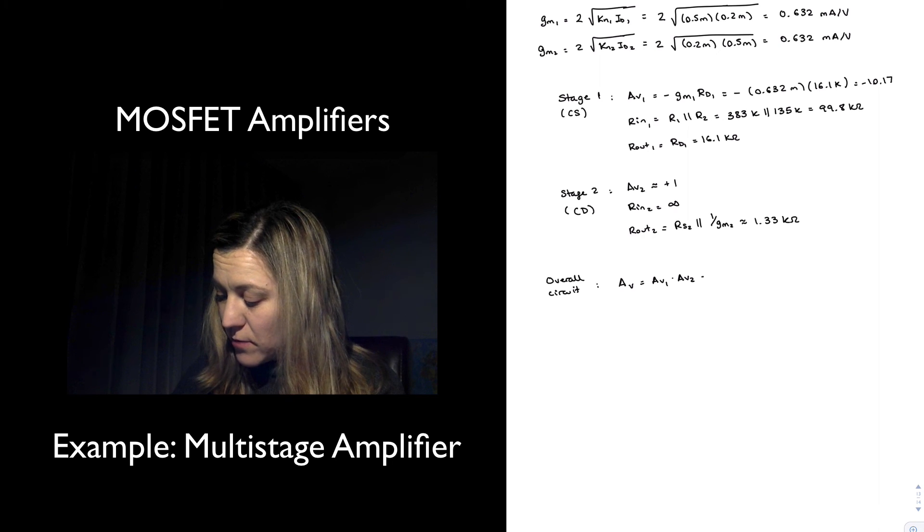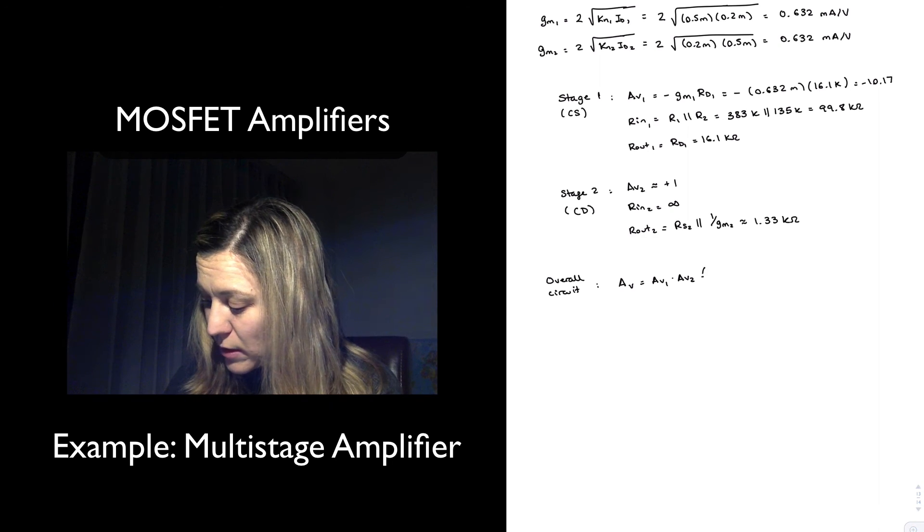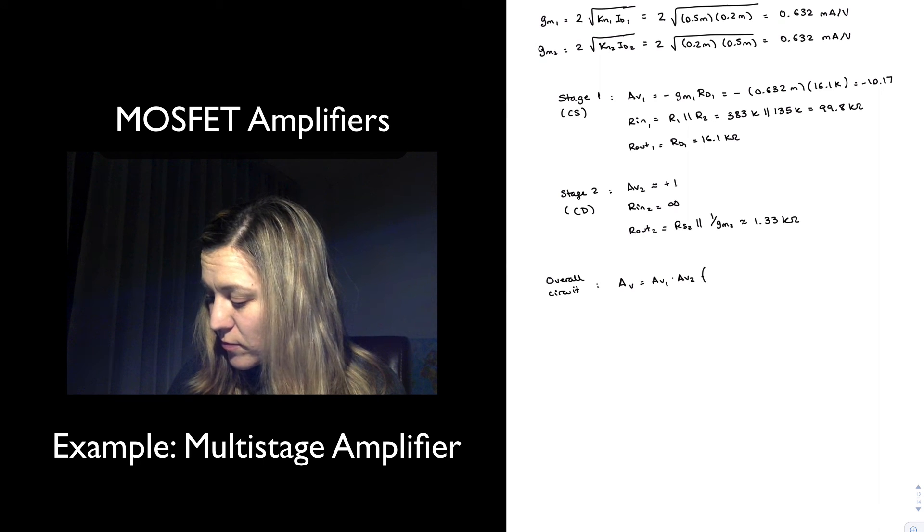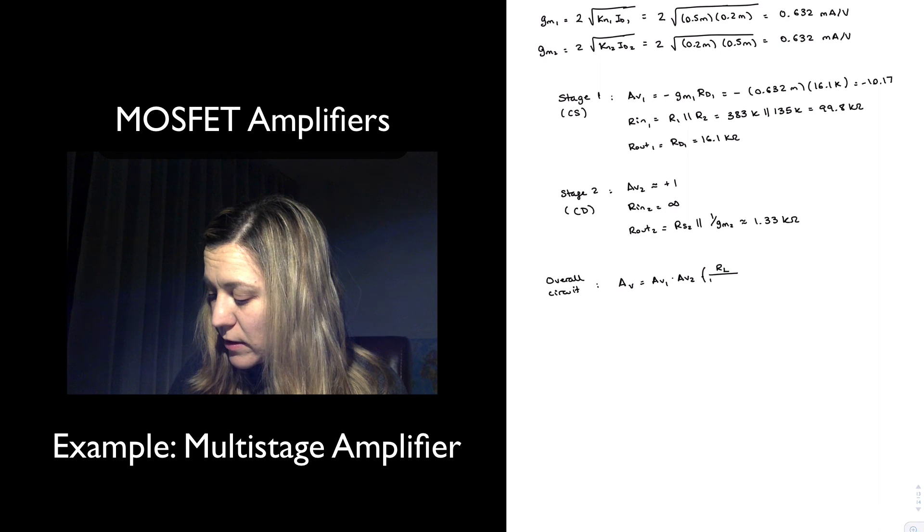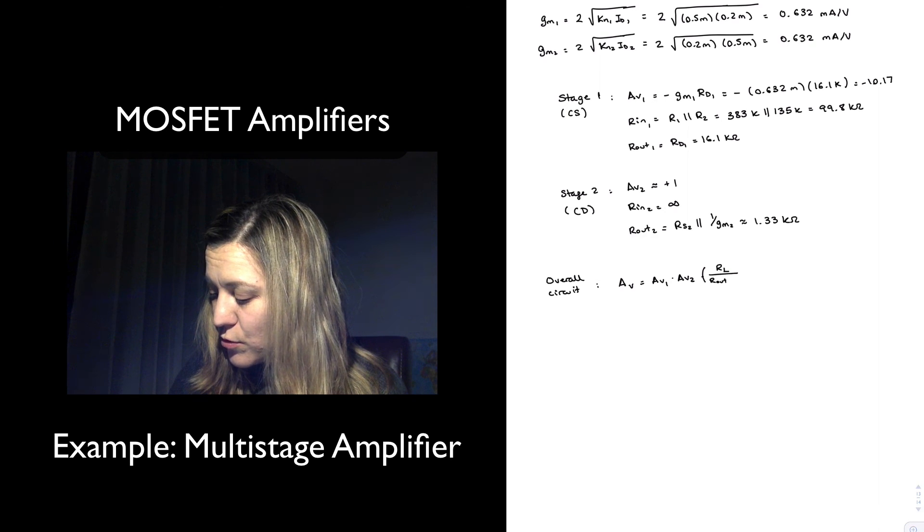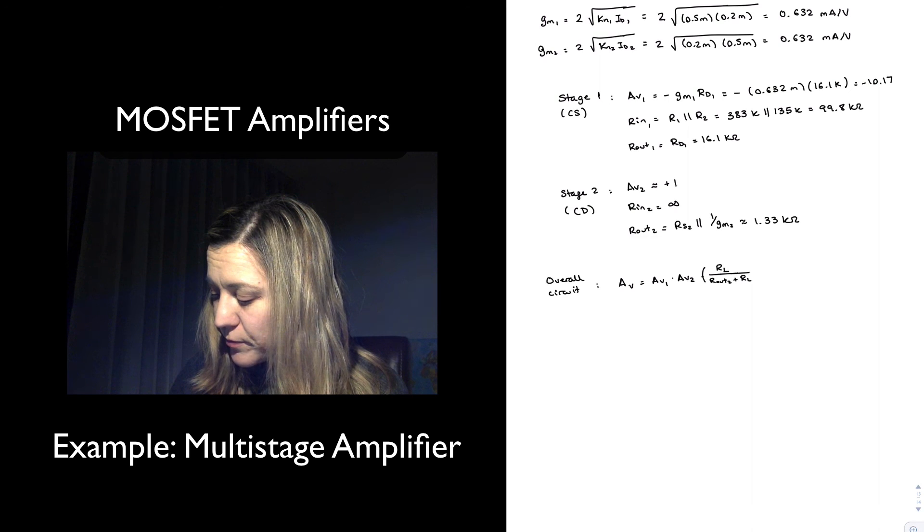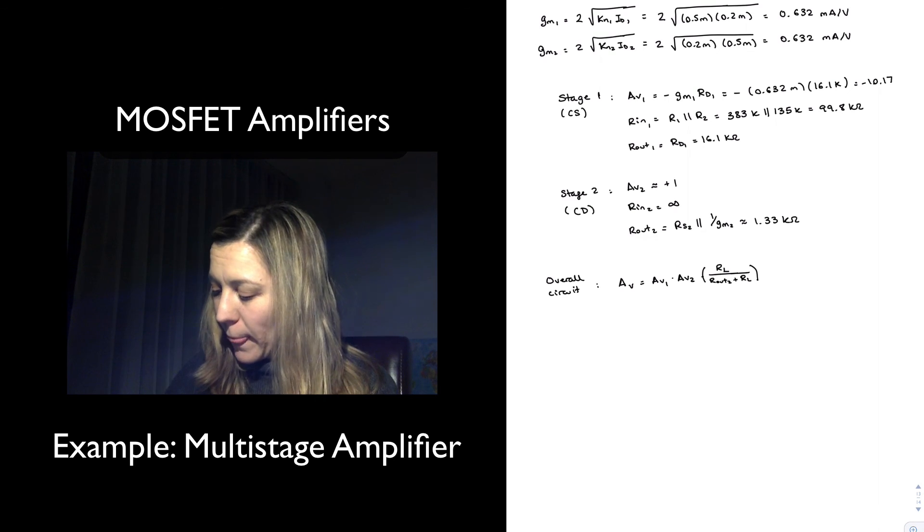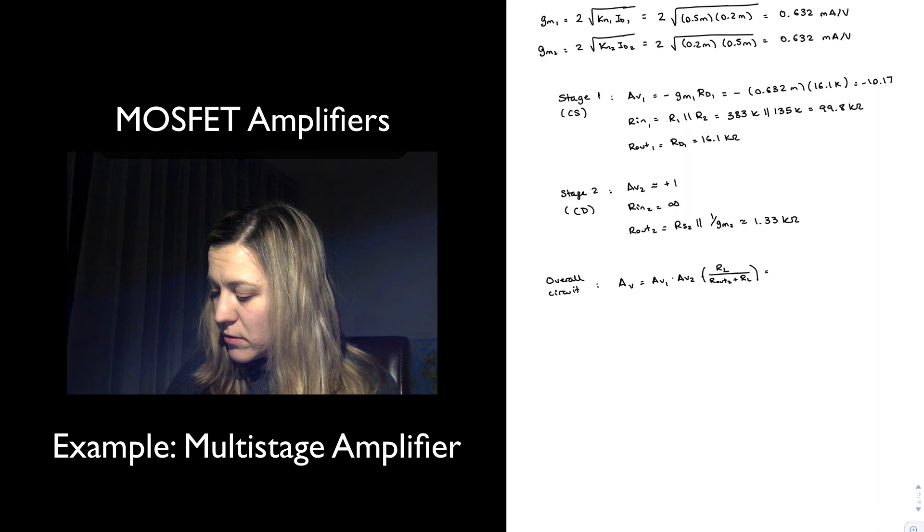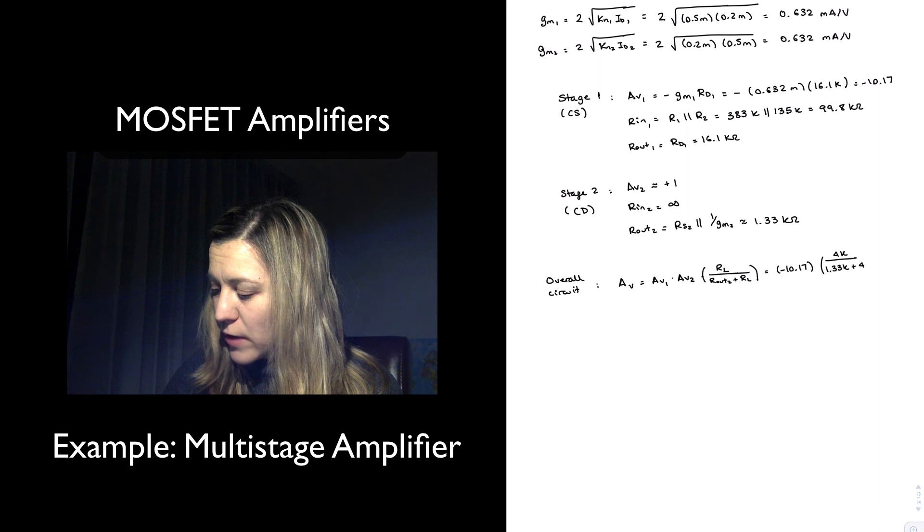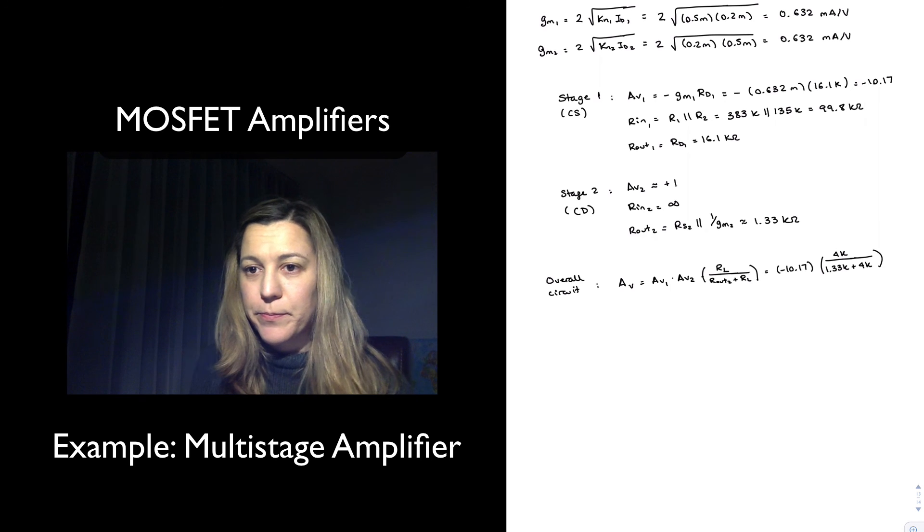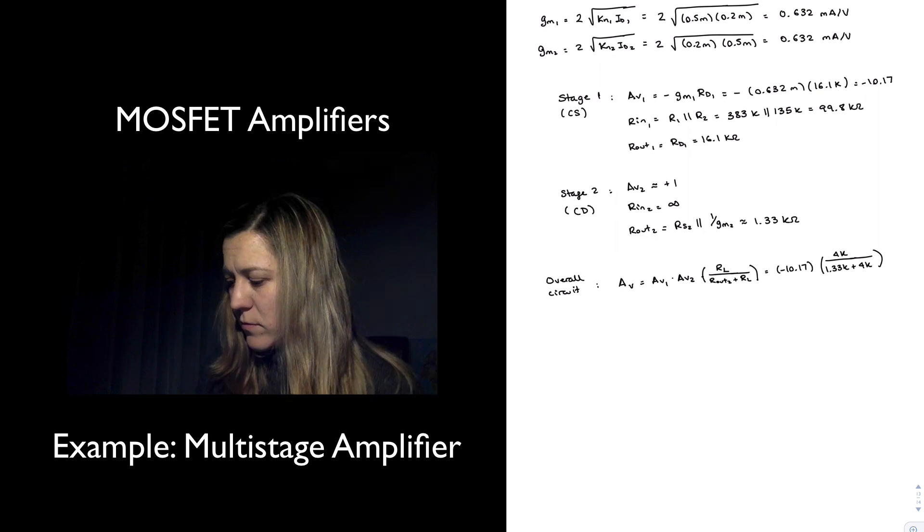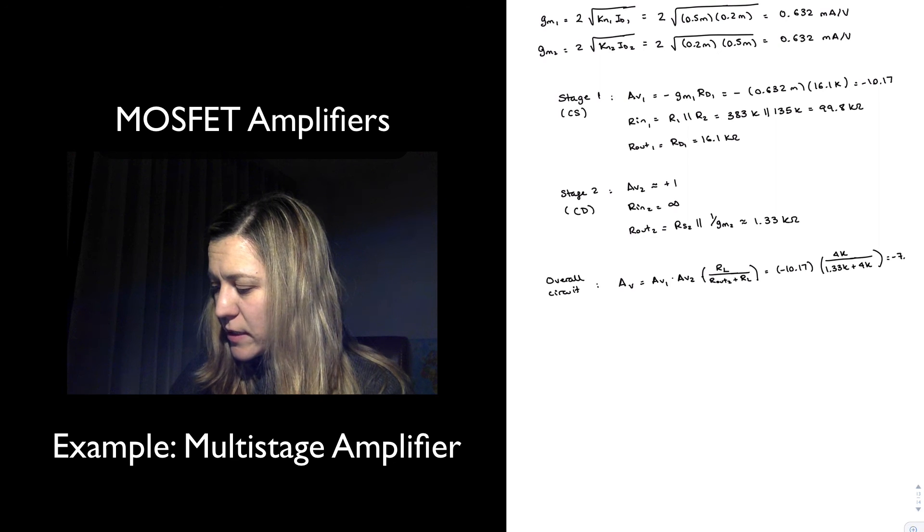So basically I'm going to say this multiplied times RL divided by Rout2 plus RL. This is going to be essentially minus 10.17 multiplied times 4k divided by 1.33k plus 4k, which is minus 7.6.